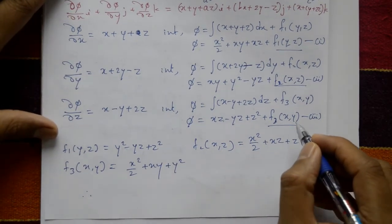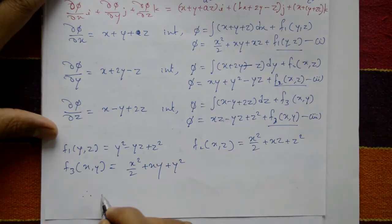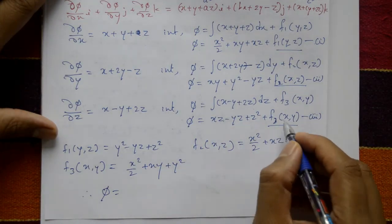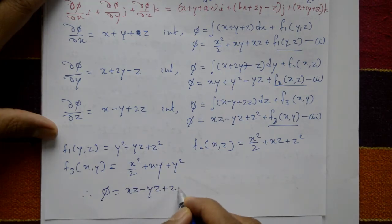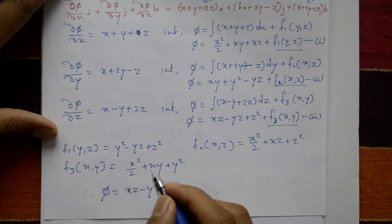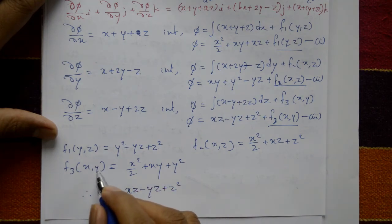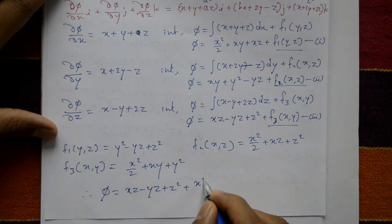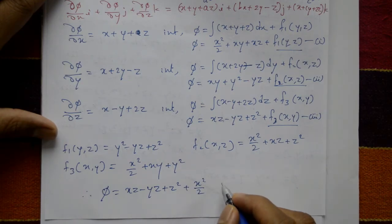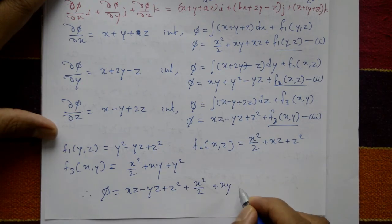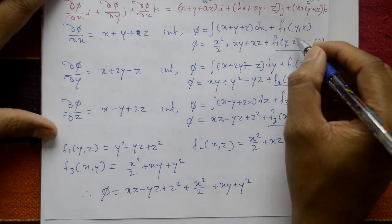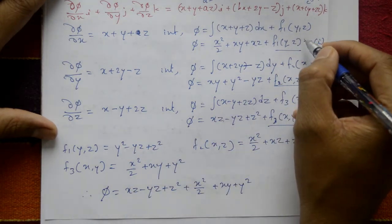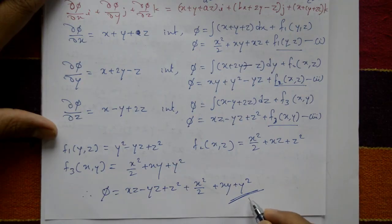Therefore, taking any one equation, say equation 3 and substituting f3(x, y): phi = xz - yz + z² + x²/2 + xy + y². You can verify by taking any of the three equations and substituting the corresponding arbitrary function — all give the same phi. This is the required solution.